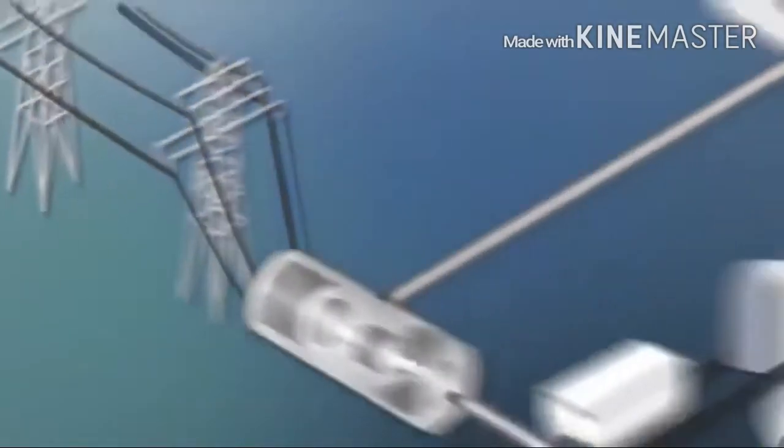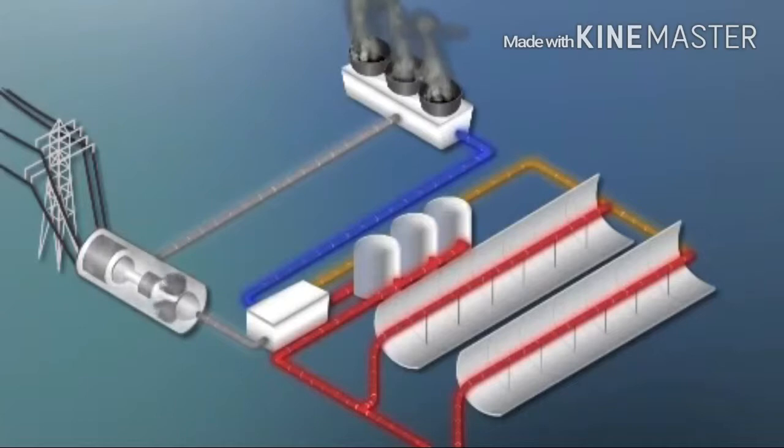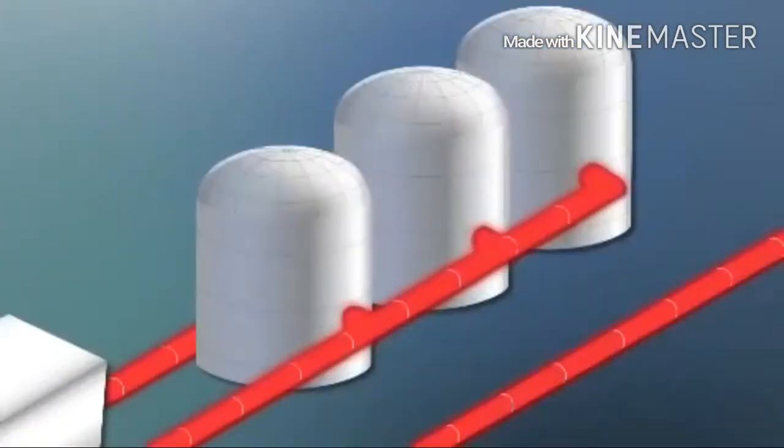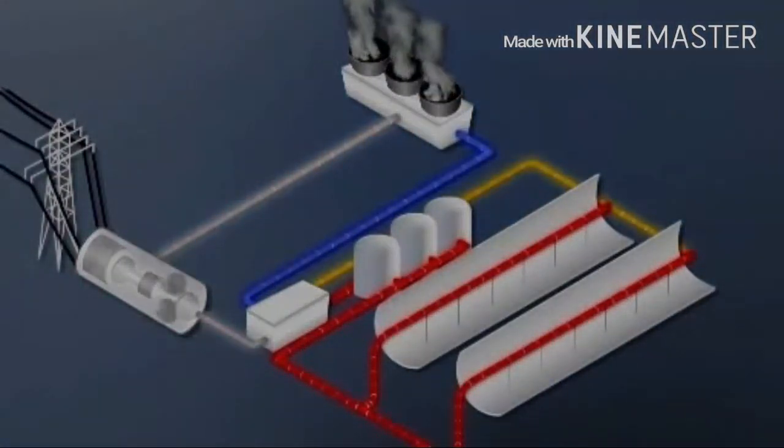Once the fluid transfers its heat, it's recycled and used over and over, and the steam is also cooled, condensed, and recycled again and again. One big advantage of these trough systems is that the heated fluid can be stored and used later to keep making electricity when the sun isn't shining.